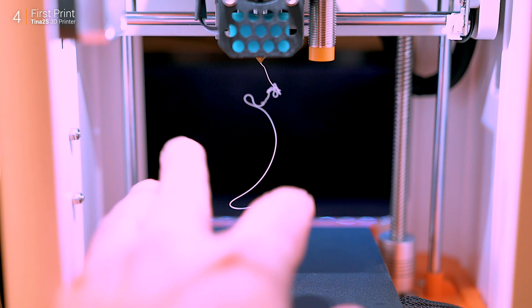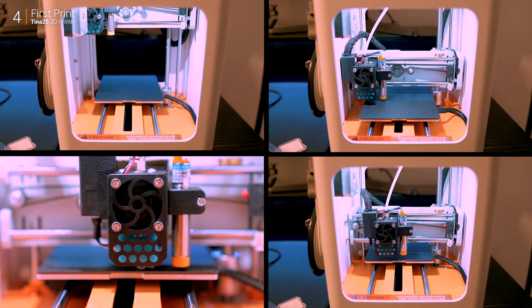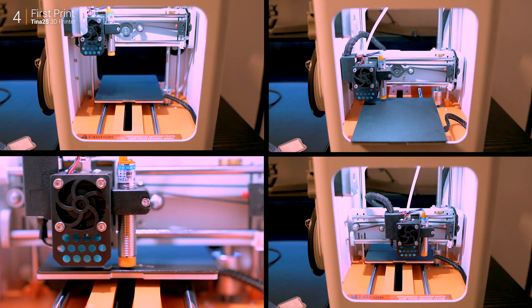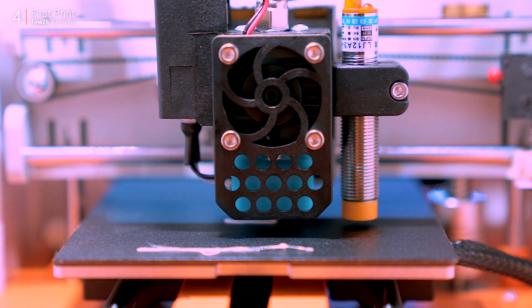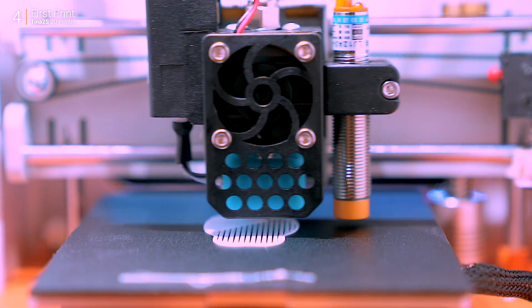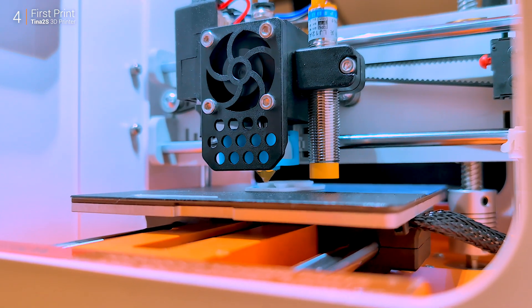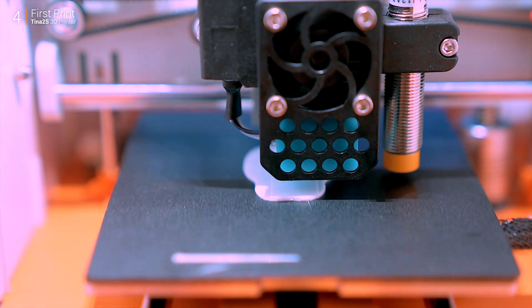The printing process kicks off with a smooth and satisfying first layer, or raft if you prefer, which is key to a successful print. Watching the rabbit take shape layer by layer is oddly mesmerizing, and it's a great confidence booster, especially if you're new to 3D printing. It makes you feel like a tech wizard, even if it's just a tiny rabbit.